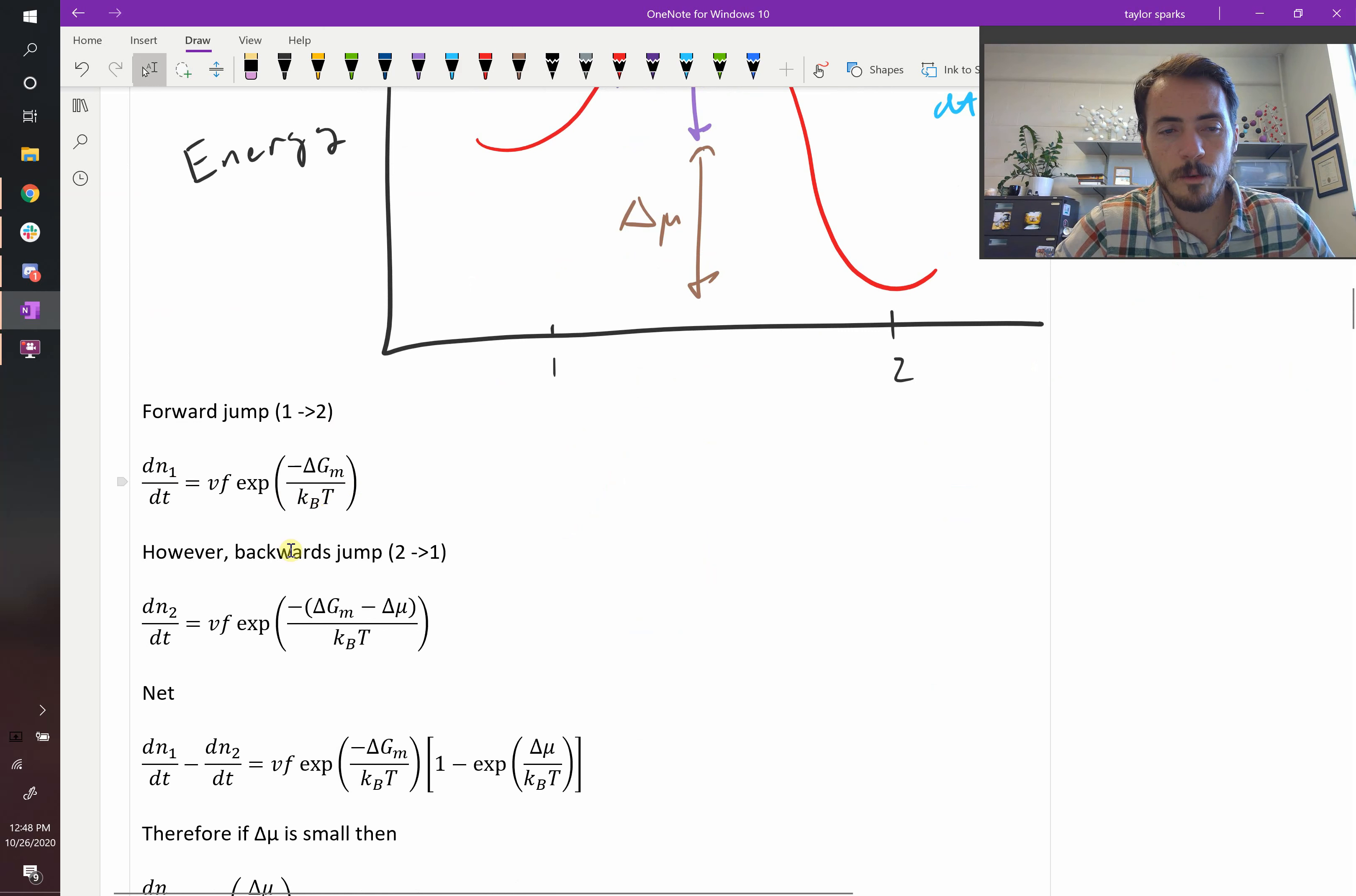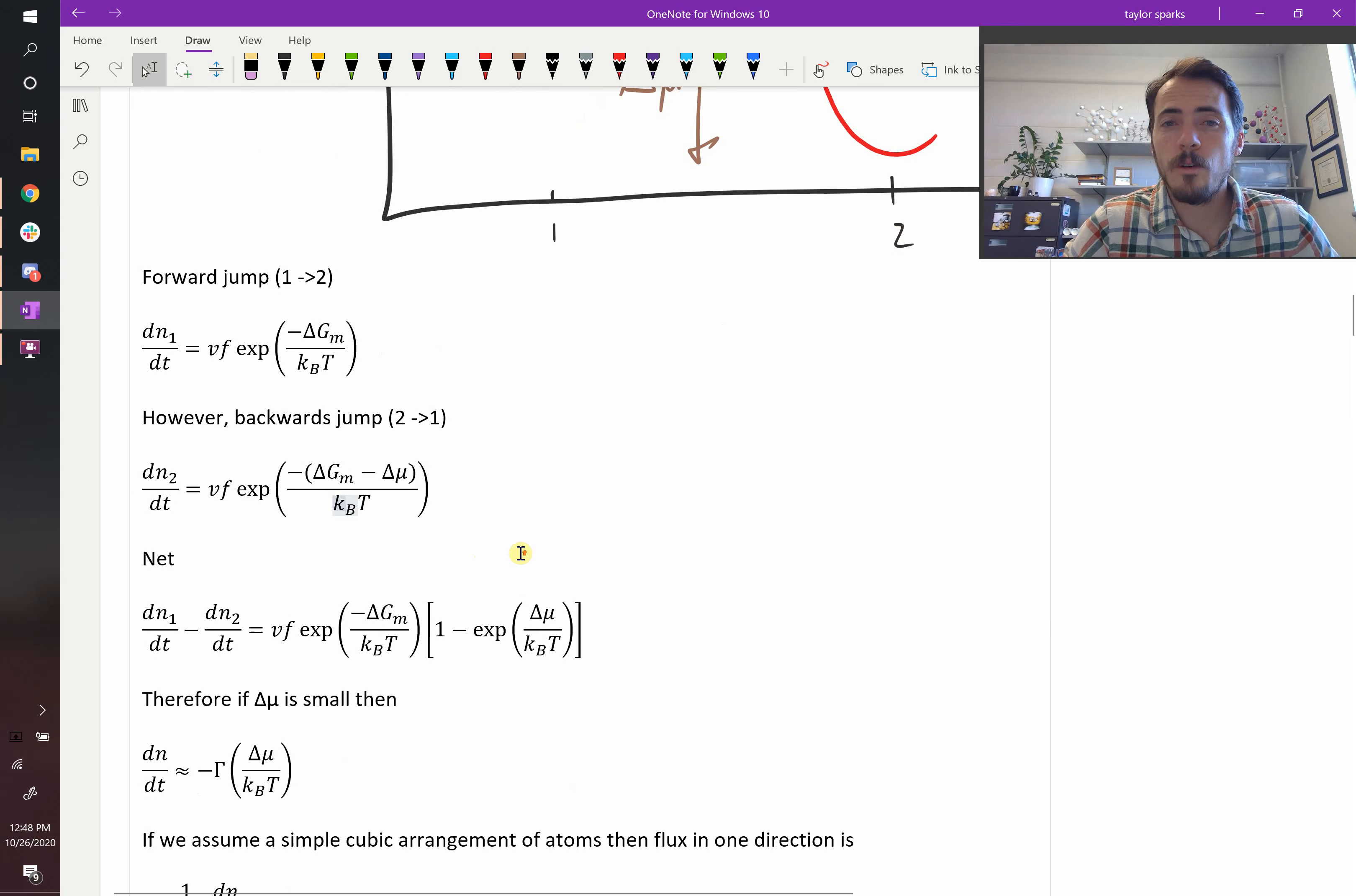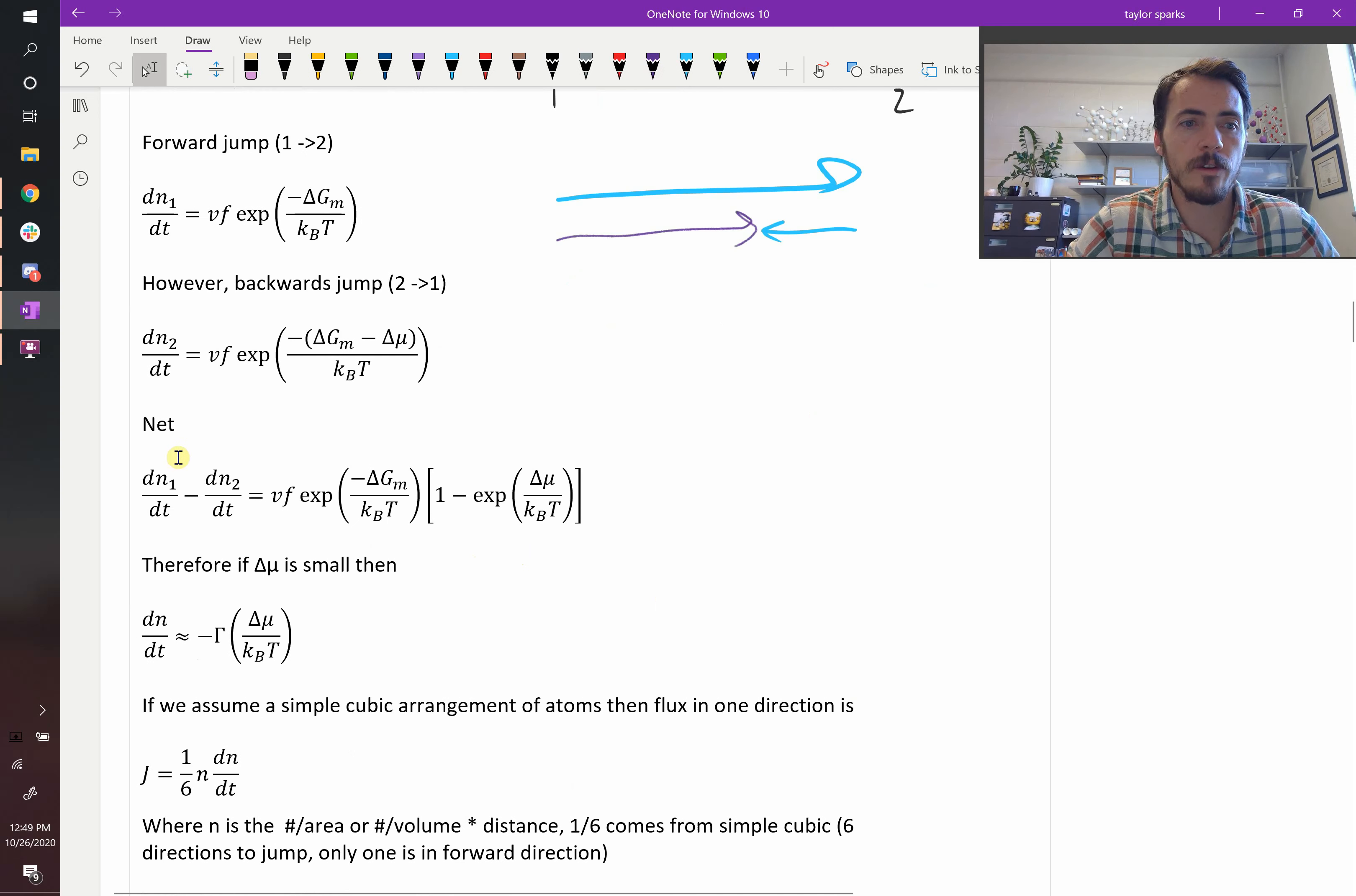Mathematically, we could write these two expressions out. dN1/dt is just what we showed you before. dN2/dt looks very similar except it's got this extra term in the exponential - the activation energy plus the chemical potential gradient. So you could actually figure out the flux, the net movement of atoms from 1 to 2. If you've got more moving from 1 to 2, but some moving back from 2 to 1, you just subtract one from the other. dN1/dt minus dN2/dt would be this expression here. And if the chemical potential gradient is small, then this could be approximated by that term right there.